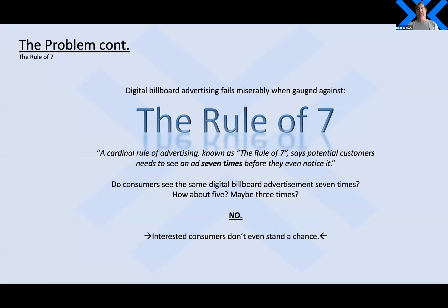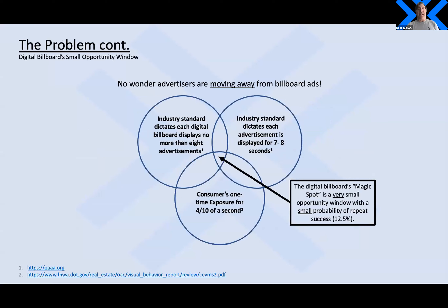Digital billboard advertising just doesn't follow the rule of seven, which states that a potential customer really should see an ad seven times before they even notice it. Can any of us remember the last ad we saw on a digital billboard? Probably not. The industry standard says no more than eight advertisements on a billboard at a time, and each advertisement is displayed for seven to eight seconds. Consumers really only spend about four-tenths of a second looking at a billboard advertisement, and that creates what's called the magic spot — a very small opportunity window with a 12.5% probability of repeat success.